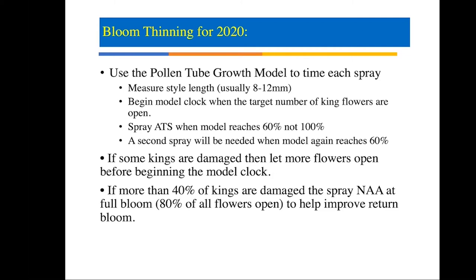One important thing regarding the math: when you evaluate at least 50 clusters — 50 fruitlets, one king and four or five laterals per cluster — if you find one or two kings compromised out of the 50 clusters randomly selected, you're already at 10–20% damage. Don't go in with just five, ten, or fifteen clusters. Terrence wanted at least 50 clusters to come up with the good numbers shown in those graphics.